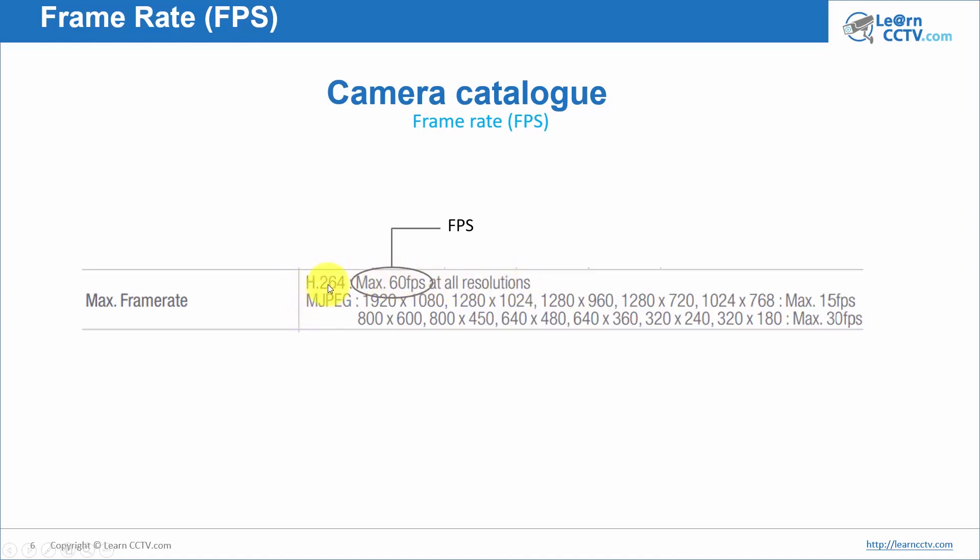But when you're using a different codec, let's say MJPEG, you have different resolution here to work with 15 frames per second, and different resolutions to work with 30 frames per second. So be careful with that. When you change the camera profile, you need to be careful on how much you are getting from your camera. Let's see an example of this.